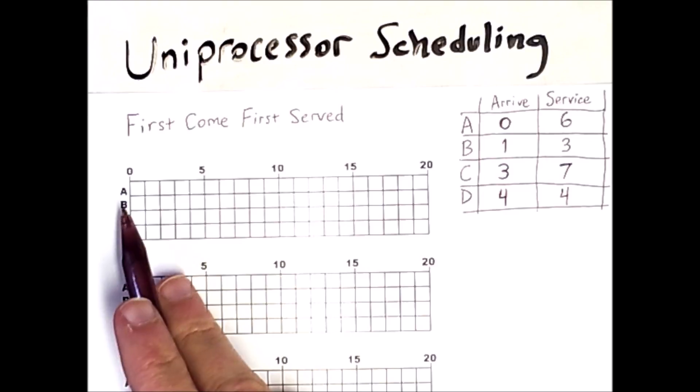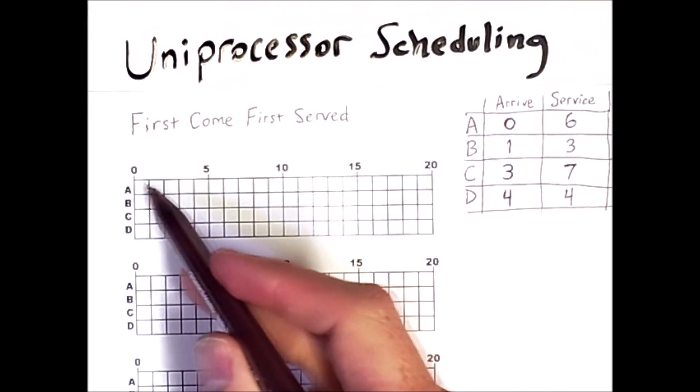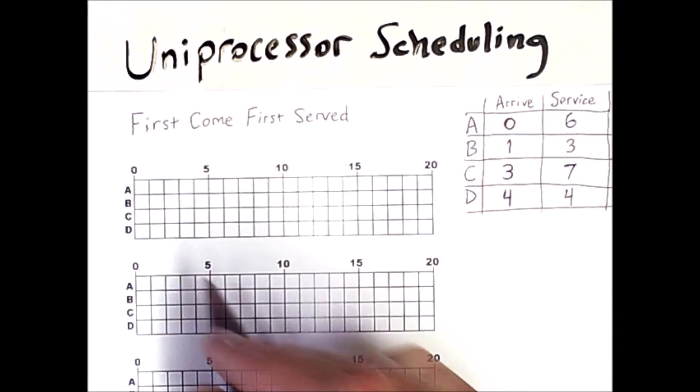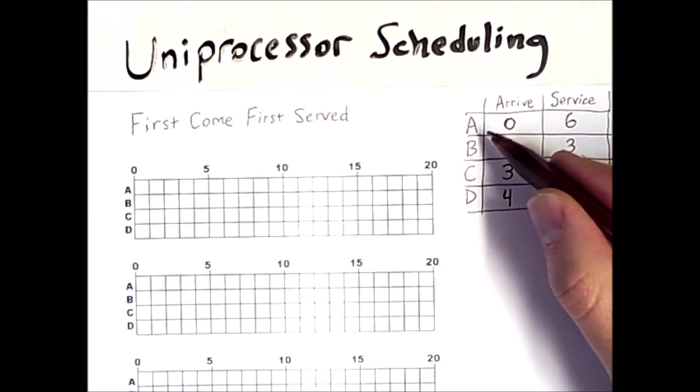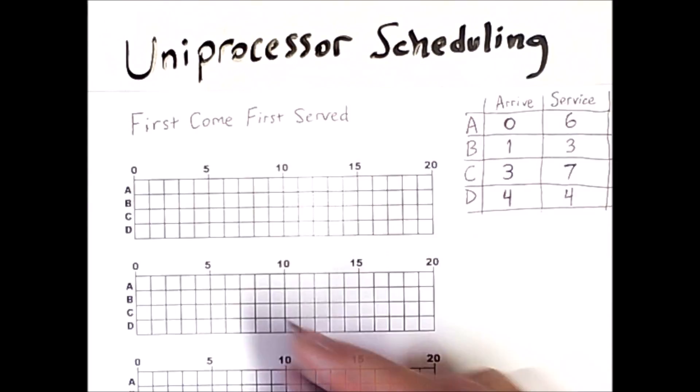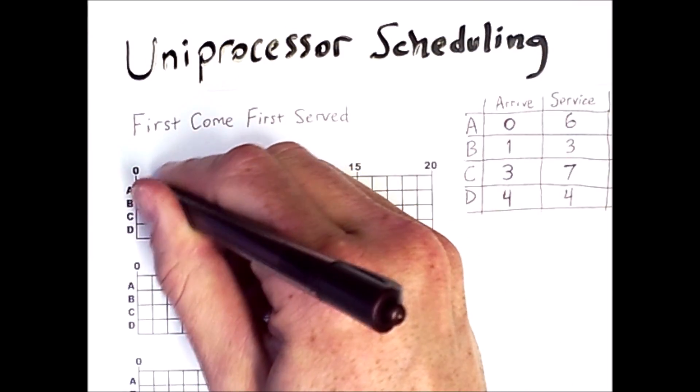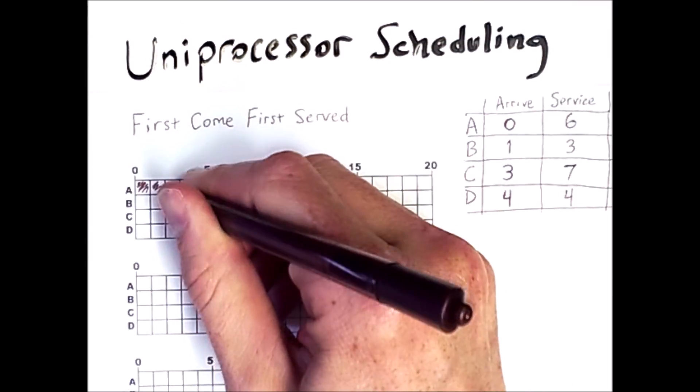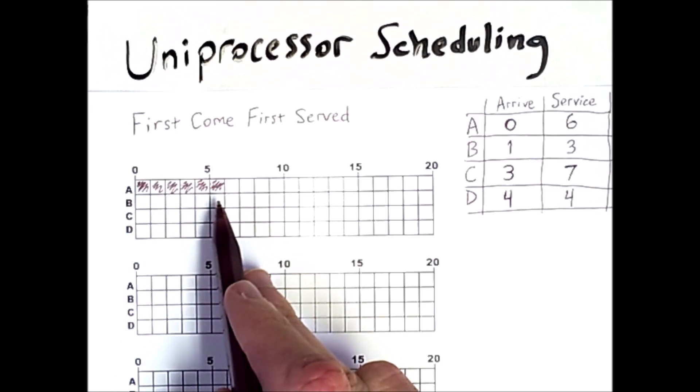So in this grid time goes from left to right, these are the system times, and because process A arrives at time zero it will run first for six units so I will color in these boxes here. So these six boxes were colored in.